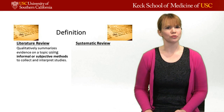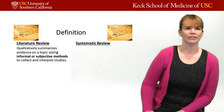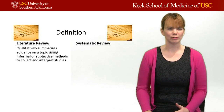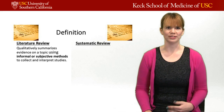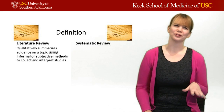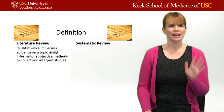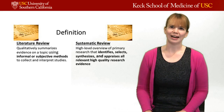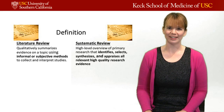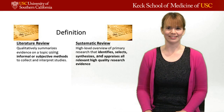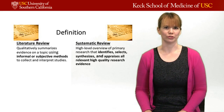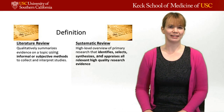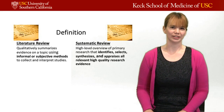Let's start with definitions. A literature review is a qualitative summary of evidence on a topic using informal or subjective methods to collect or interpret studies. We've all done this — we run a search in PubMed, see a bunch of articles, and go through saying 'this one looks good' or 'I know this author, so it's going to be good.' That's informal and subjective. Whereas a systematic review is a high-level overview of primary research that identifies, selects, synthesizes, and appraises all relevant high-quality research evidence. There's no longer a game of what looks good to me — systematic reviews set out at the very beginning to get all the literature on a given topic.